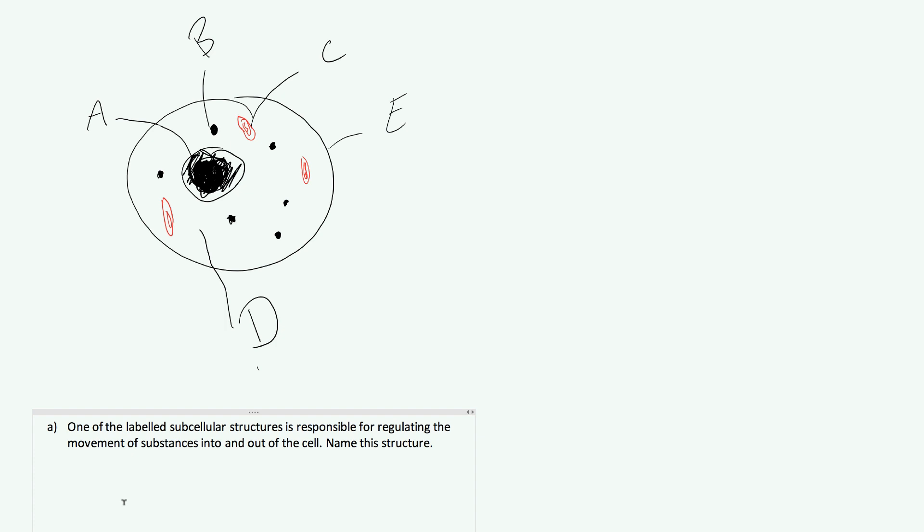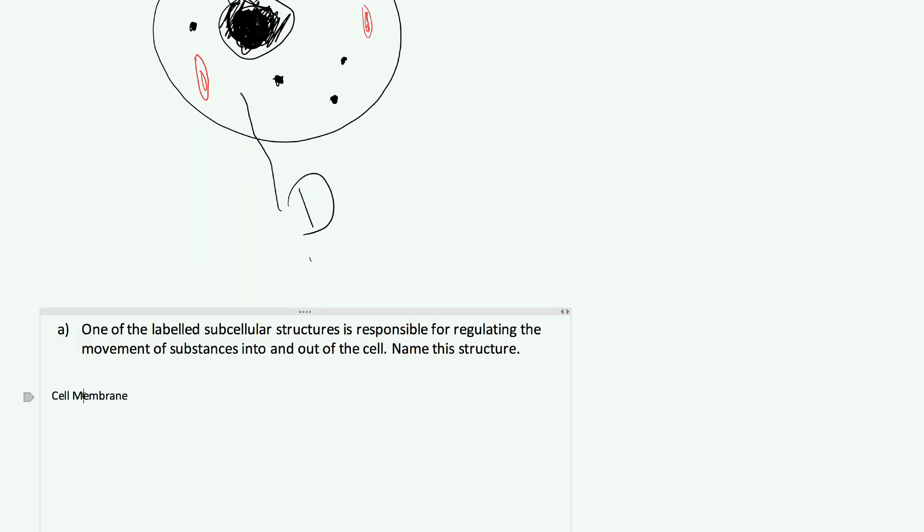You should know this already. If you don't, please have a look at the videos where I cover the structure of different cells. This one's an animal cell, but this particular component is present in all cells. This particular component is called the cell membrane. I might actually zoom in a little bit. There we go. The cell membrane would be our answer.